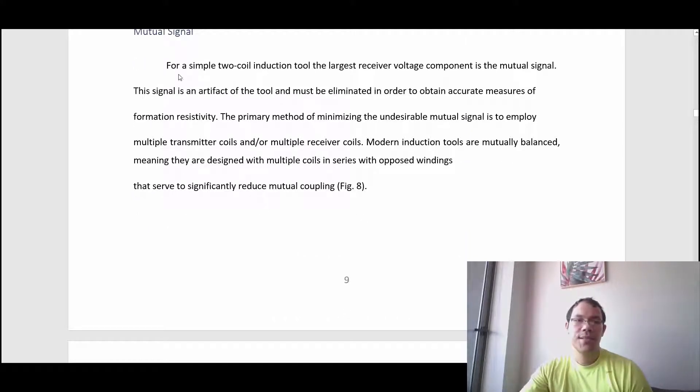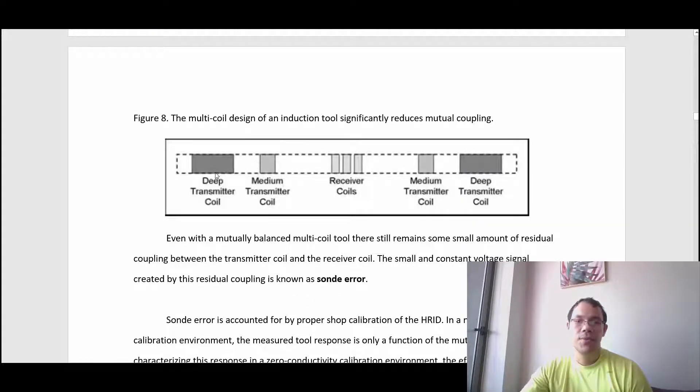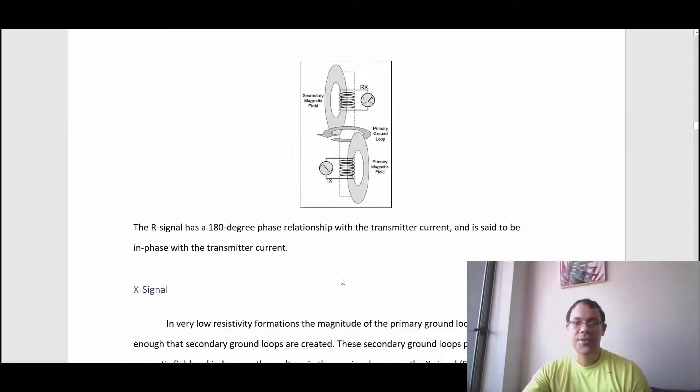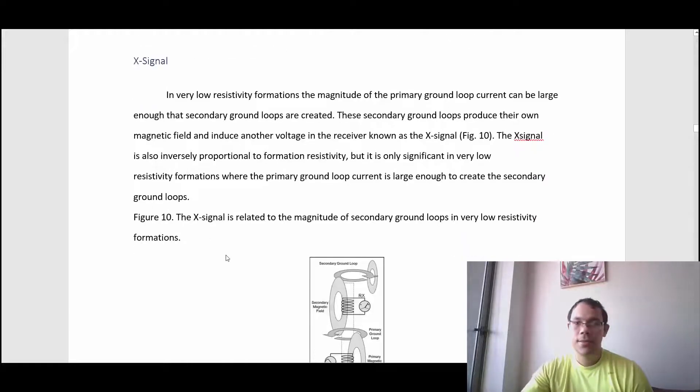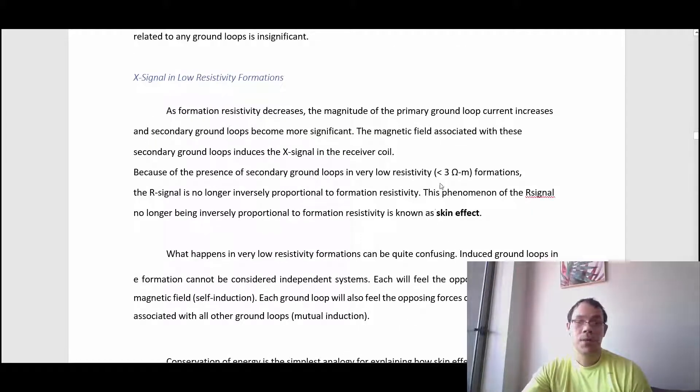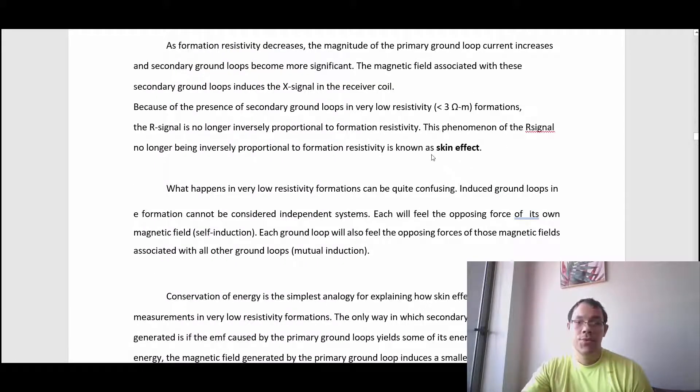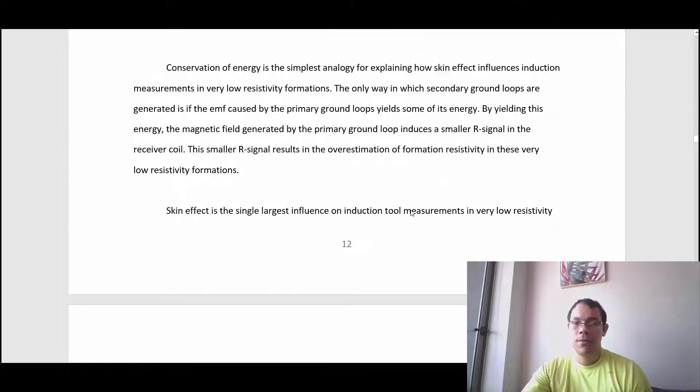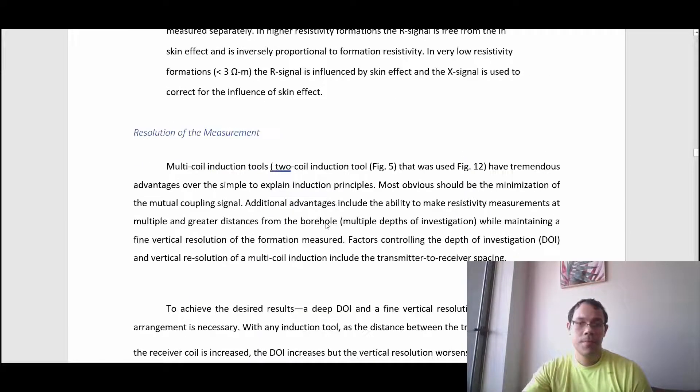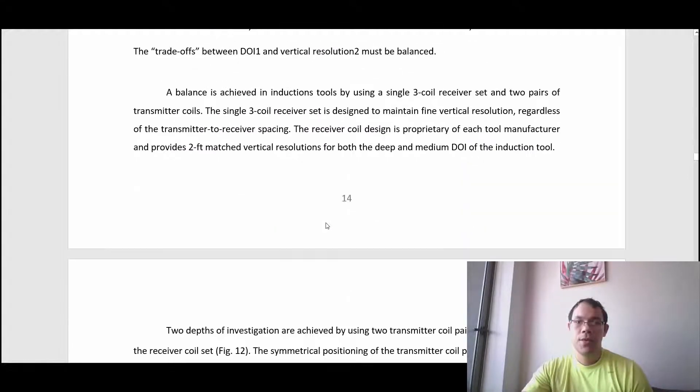In this area, we're talking about how to address mutual signals, which is basically using several coils. But even after using several coils, there is still some error called sum error, and we take care of that in the calibration. The X signal, as we said before, happens in very low resistivity formations. Do you have an idea of how much that is? It's less than 3 ohm-meters. When that happens, there is a skin effect, which is undesired.